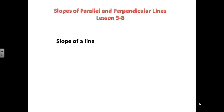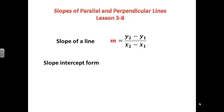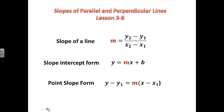We need to do a basic review before we dive into the main stuff. The formula for slope is y2 minus y1 over x2 minus x1. Please write these down — all of these will be on your video quiz. Slope-intercept form is y equals mx plus b, where m is the slope and b is the y-intercept. We'll also use point-slope form: y minus y1 equals m times the quantity x minus x1.